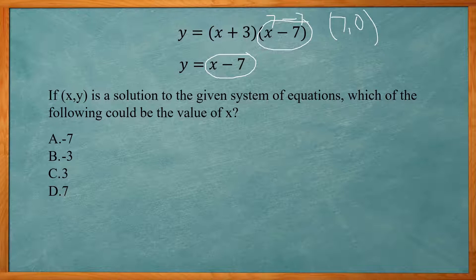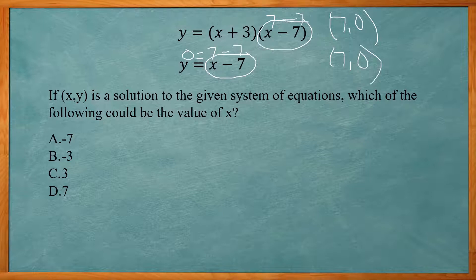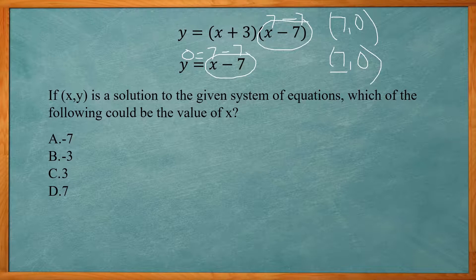If I also plug x = 7 into the other equation, I get 7 − 7 = 0, giving another point (7, 0). So right away I can get the answer just by spotting the shared factor. That saves a lot of time. The first approach showed the full algebraic method, but if you look closely, you can solve this in just a few seconds.